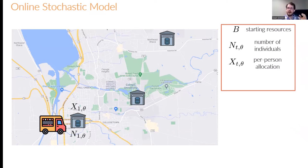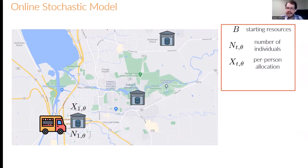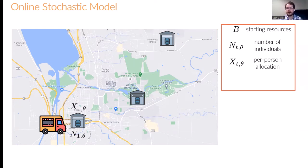Afterwards, the mobile food pantry decides a per person or type allocation X1 theta for each of the different resources. This could be something like four cans of soup for the individual vegetarian, or soup, rice, and other produce for the family of size 4. The total amount of resources used in this round will be the product of the allocation for the type multiplied by the number of individuals for that round of that type. This completes the first round.